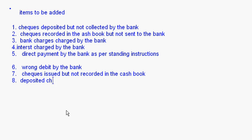Lastly among additions: deposited checks or bills receivable — this case again increases the overdraft balance as per the passbook, so this should also be added. These are all the items to be added. Now let's look at the items to be deducted.